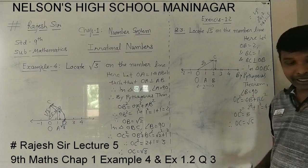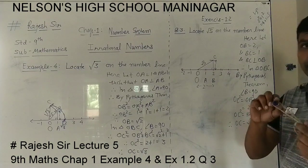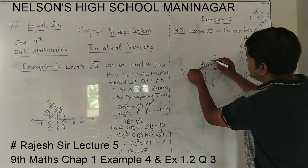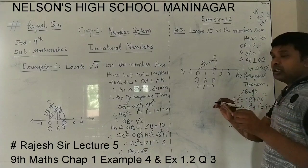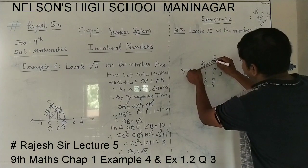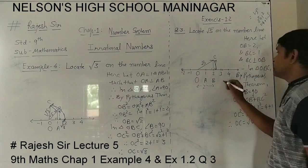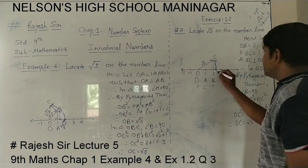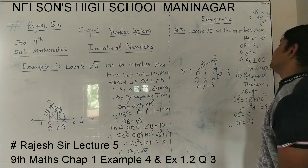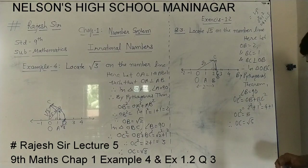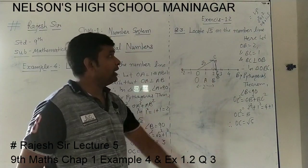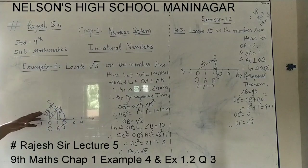So OC length is showing root 5 length. Now we take this length with the compass — place the rounder point on O and stretch the pencil point up to C. With this root 5 length, keeping the compass on origin O, we draw an arc intersecting the given number line. We call this point P, and point P represents the real number root 5 on the number line.